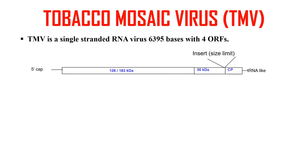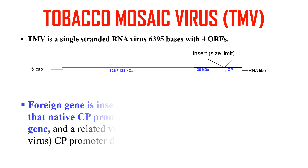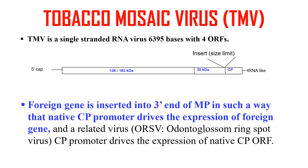For RNA viruses, the example is TMV — tobacco mosaic virus — which is a single-stranded RNA virus with a genome of 6,395 bases and four ORFs. As shown in the diagram, it contains a 126 to 183 kilodalton replicase complex, a 30 kilodalton movement protein, and a 17.5 kilodalton capsid protein. A foreign gene can be inserted at the 3' end of the movement protein such that the native promoter already present drives the expression of the foreign protein. In this way, tobacco mosaic virus can also be used as a vector.